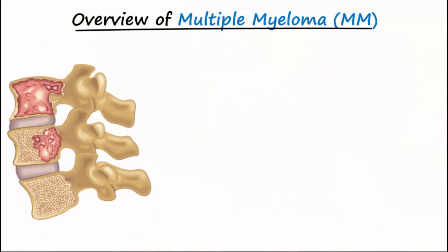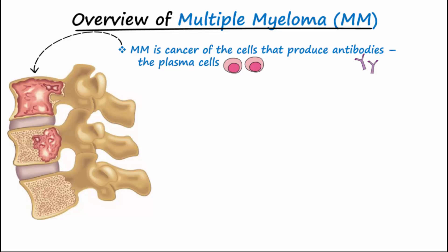Multiple myeloma is a cancer of plasma cells, which are differentiated B cells that produce antibodies. As these plasma cells expand in the bone marrow, they crowd out and impair production of red cells, white cells, and platelets.